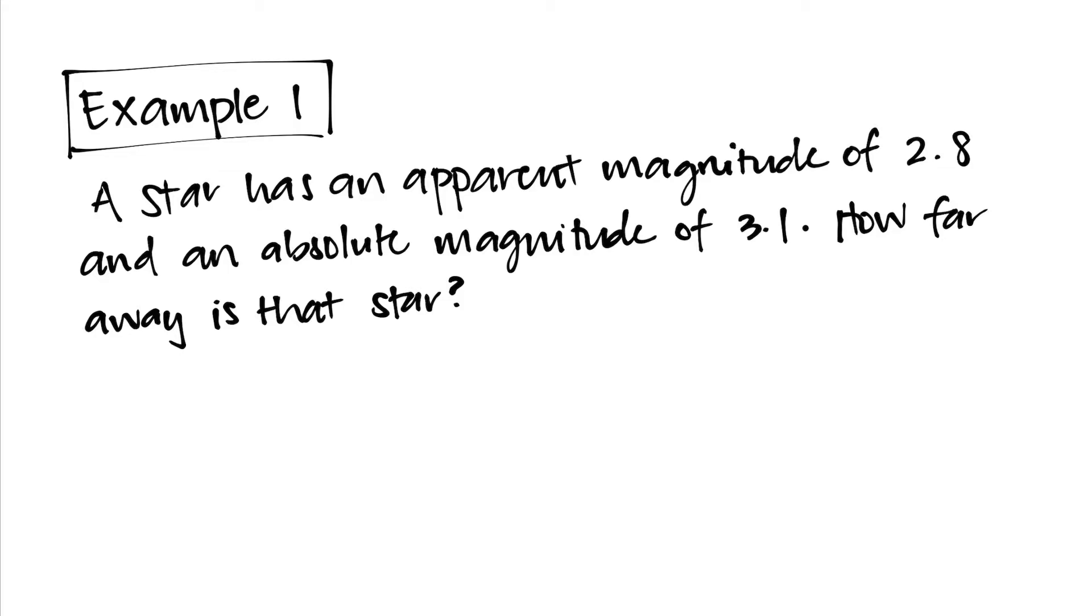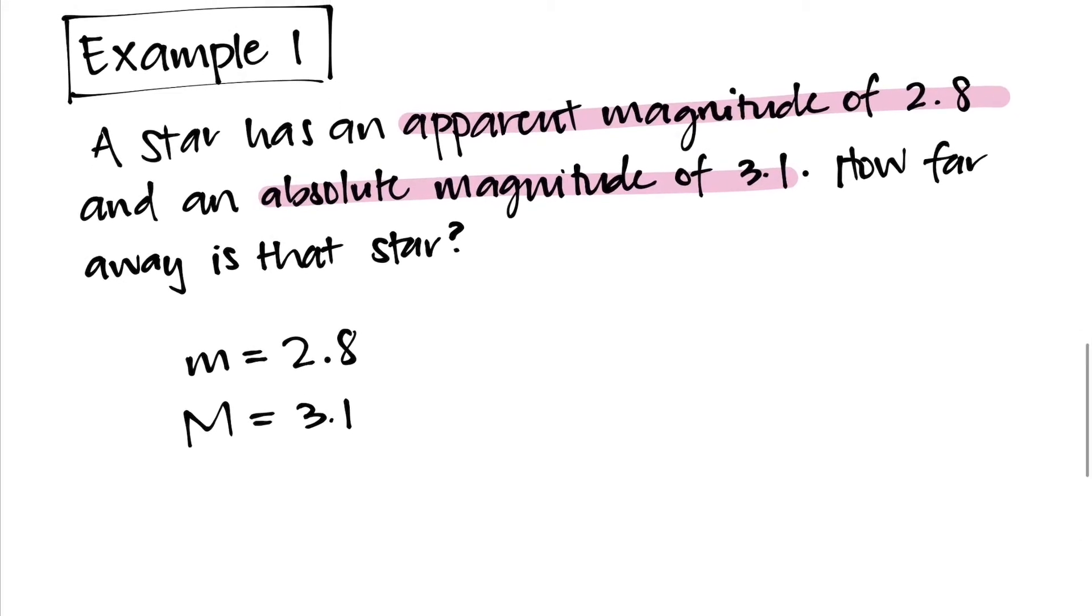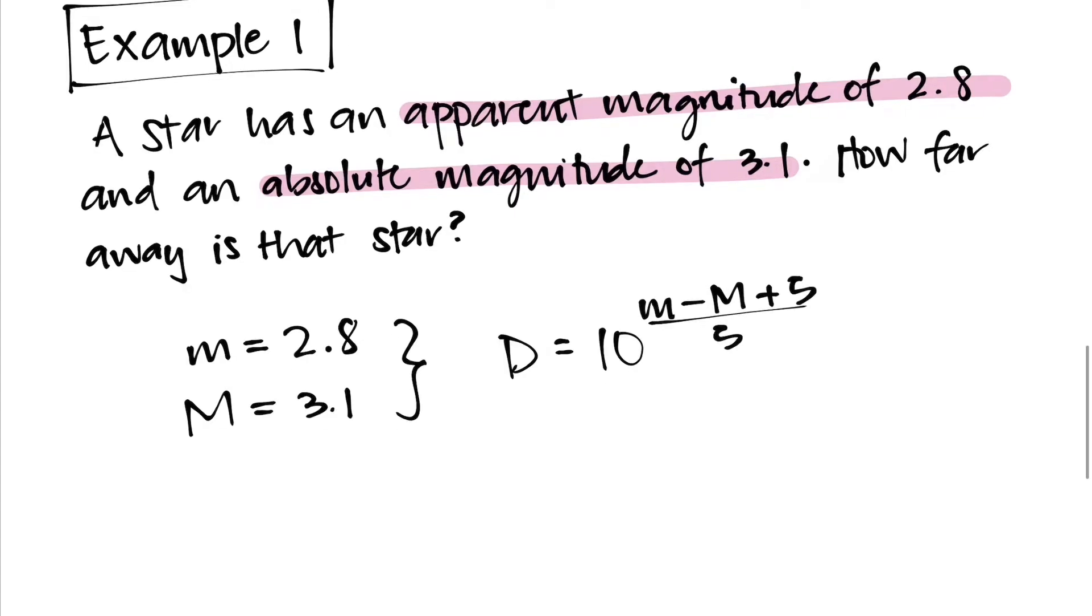So the way to go about solving this problem is to identify the values we've been given in the problem, in which case we have an apparent magnitude of 2.8 and an absolute magnitude of 3.1. In the forms of the variables that means that the lowercase m which we'll use is 2.8 and the capital M is 3.1. Now this is important for us to know because we're going to be using lowercase and uppercase m in the distance modulus itself, which says D equals 10 to the power of m minus M plus 5 all over 5. So let's jump right into it and get started.